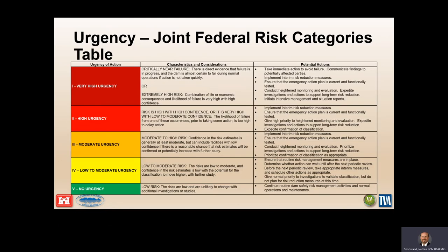Regarding urgency, this table from the Federal Risk Management Guidelines has been adapted by each federal agency with different names. Essentially, the entire portfolio of structures is divided into categories and ranked by risk and urgency. Very high urgency covers the most concerning dams; no urgency covers those with almost no risk. The goal is consistency in categorizing structures between agencies, ensuring that for really high-risk dams, we're all approaching them with the same level of urgency and potential actions.